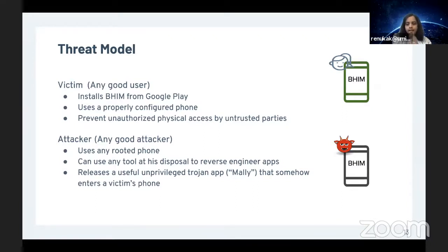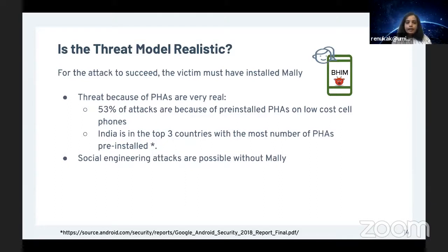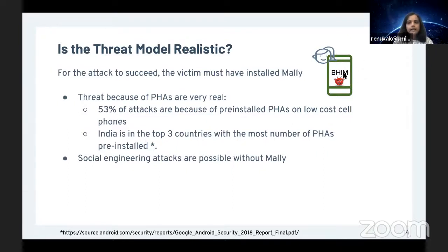We assume a good user who installs Bheem from the Google Play Store, uses a properly configured phone, and prevents unauthorized access. For the attack to succeed, we assume the victim has Mali installed. Is this threat model realistic? According to Google, threats from Potentially Harmful Applications (PHAs) are very real: 53% of attacks are due to PHAs pre-installed on phones, and India is in the top three countries with the most pre-installed PHAs. An attacker who doesn't want to use Mali can simply resort to social engineering.